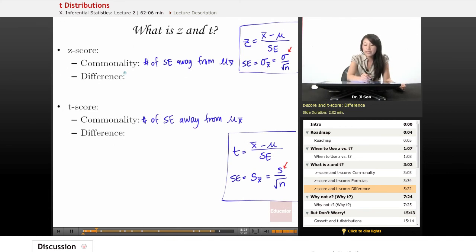So here the difference is that standard error found using sigma, the true population standard deviation. And obviously, if you use the real deal, that's better or more accurate.